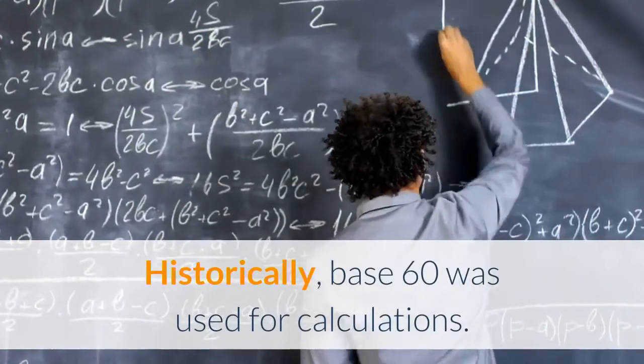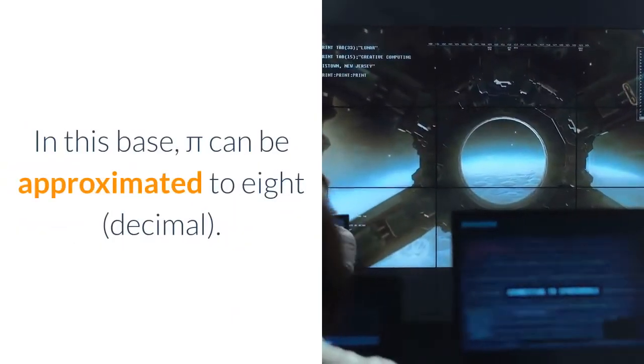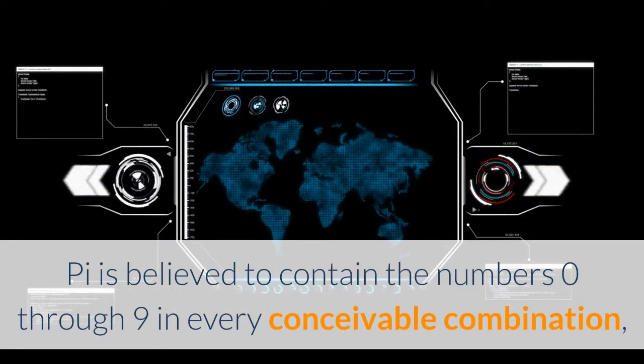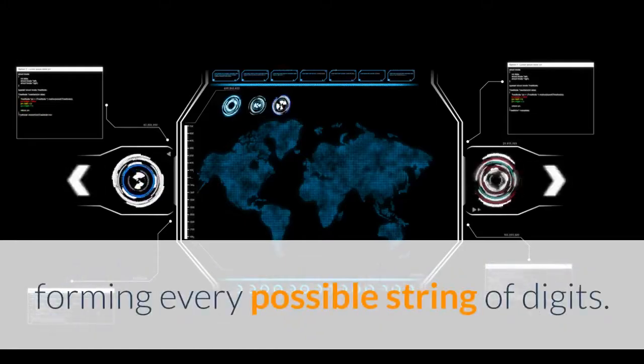Historically, base 60 was used for calculations. In this base, Pi can be approximated to eight decimal places. Pi is believed to contain the numbers zero through nine in every conceivable combination, forming every possible string of digits.